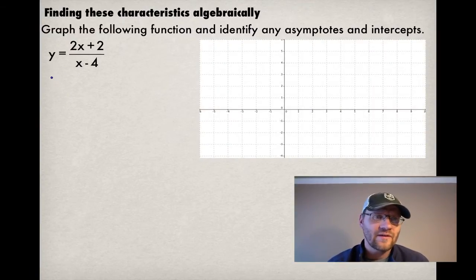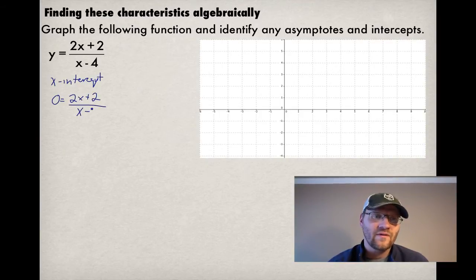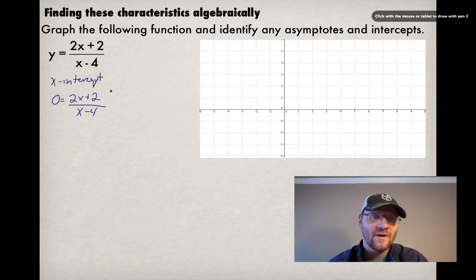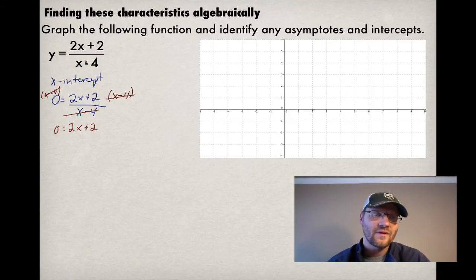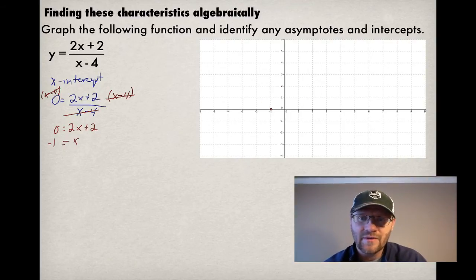So let's talk about x-intercepts first. Well, we know an x-intercept is where y equals 0. So we're going to make y equals 0. And we're going to solve this equation. Now, the way to solve this equation is we're going to multiply both sides by x minus 4. And when we do that, you'll notice that they cancel out on the right-hand side. But on the left-hand side, it's x minus 4 times 0. So that also just becomes 0. So really what this is saying is that if you want to find your x-intercepts, we can ignore the bottom altogether. And so we have 0 equals 2x plus 2. We solve for that, and we get x equals negative 1. So there's our x-intercept at negative 1.